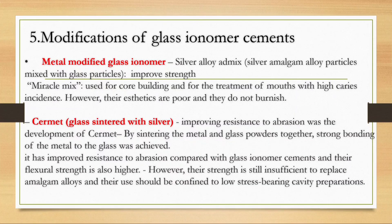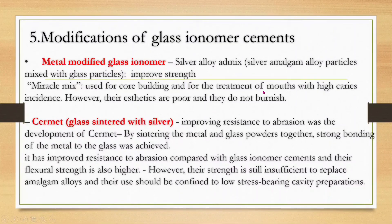Modifications of GIC: First, metal-modified glass ionomer — silver alloy admix, where silver amalgam alloy particles are mixed with glass particles, improving strength. This is known as Miracle Mix, commonly used for core buildup and in patients with high caries risk. The drawback is it is acidic due to alloy content, giving it a blackish color.